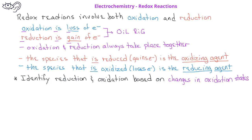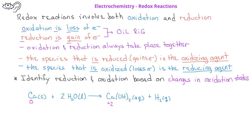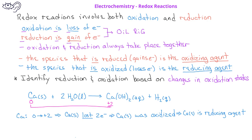It's possible to identify oxidized or reduced species based on a change in their oxidation states. In this example, we see that calcium metal reacts with liquid water to produce aqueous calcium hydroxide and hydrogen gas. In this situation, the calcium metal has an oxidation state of zero, whereas on the product side, the calcium ions in calcium hydroxide have an oxidation state of plus two. This means that the calcium metal lost two electrons, and so we would say that the calcium metal on the reactant side was oxidized. We could also say that the calcium metal is the reducing agent.